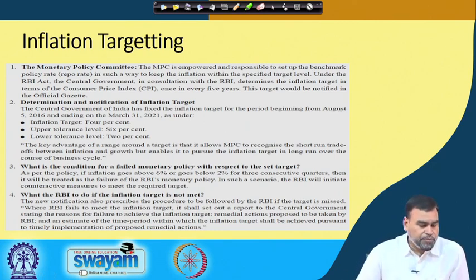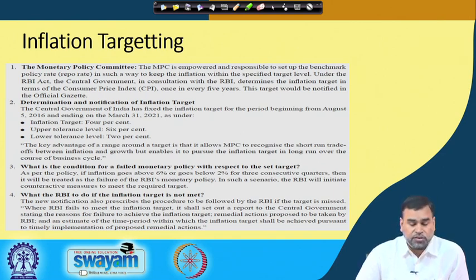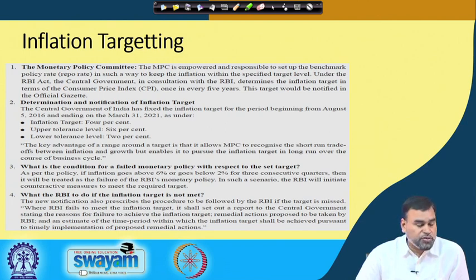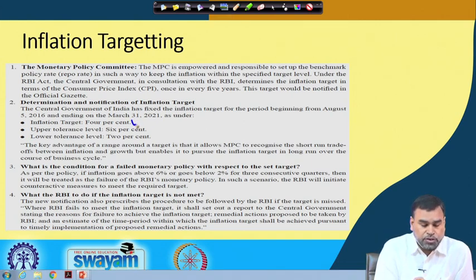Regarding inflation targeting, the Monetary Policy Committee is empowered and responsible to set the benchmark policy rate - the repo rate - in such a way that inflation can be kept within a certain limit. The inflation target can be maintained and changed every 5 years, based on the Consumer Price Index. The central government of India has fixed the inflation target for the period beginning August 2016 and ending March 31, 2021, with the target at 4 percent, upper tolerance limit at 6 percent, and lower tolerance limit at 2 percent.